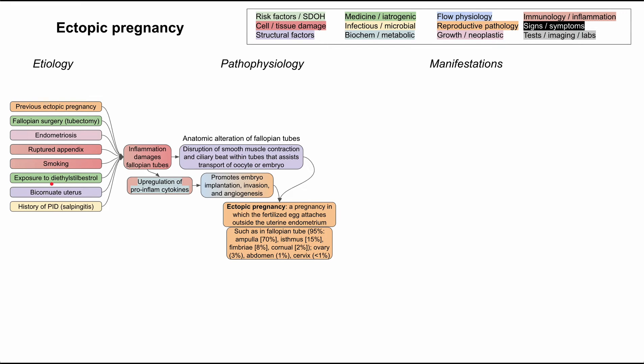A bicornuate uterus can cause inflammation, or it could also just be a structural deficit without inflammation. And lastly, and this might be one of the more common causes, pelvic inflammatory disease — usually an infectious process like salpingitis — can of course damage the fallopian tubes as well.